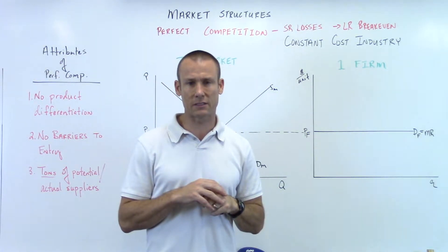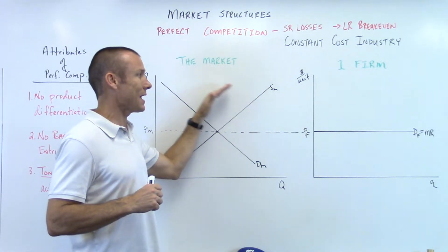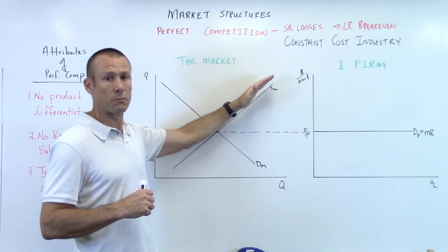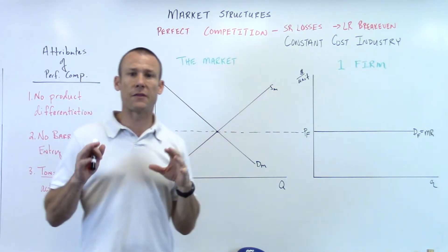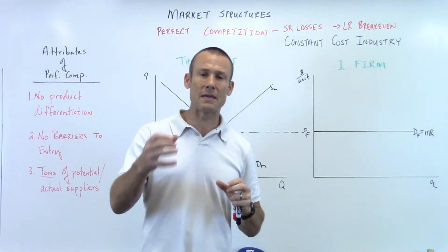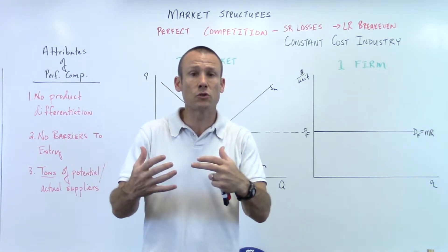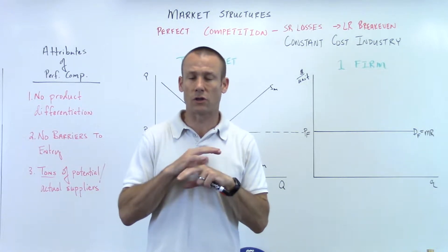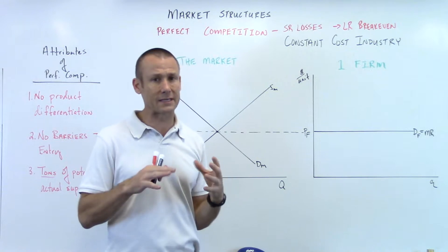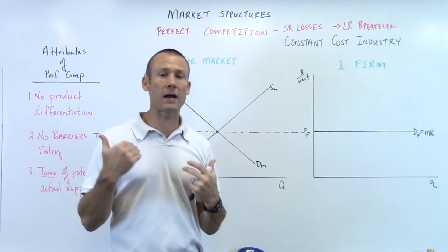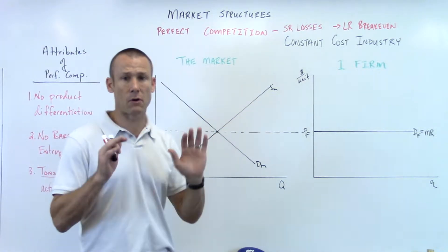What's the constant cost industry? It is when suppliers move in or exit an industry — notice what I'm doing to the market supply curve — suppliers move in or exit, there's no impact on the input prices for production. Those inputs to production, the prices of those goods are not changing. So the cost of producing is not changing.